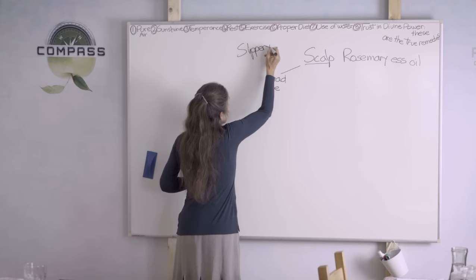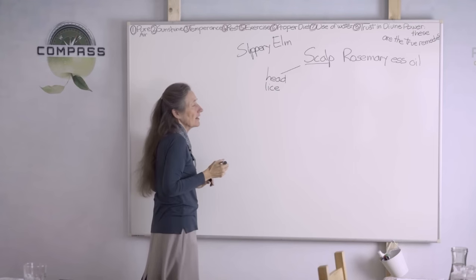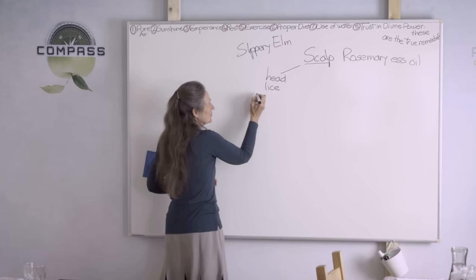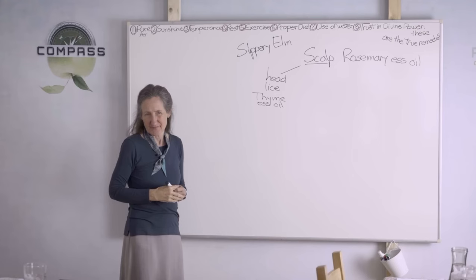With head lice, these are all the things you can do with slippery elm. When you're going to use it for head lice, you've got to put something in there that's incredibly strong. You can use thyme oil. Thyme essential oil is very strong, and the head lice hate it.